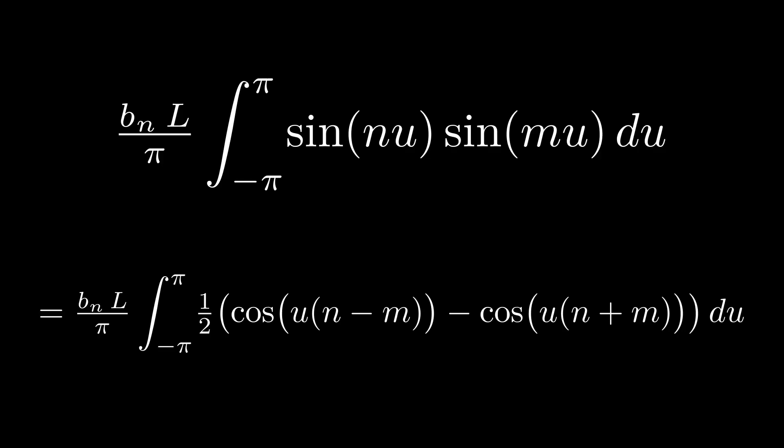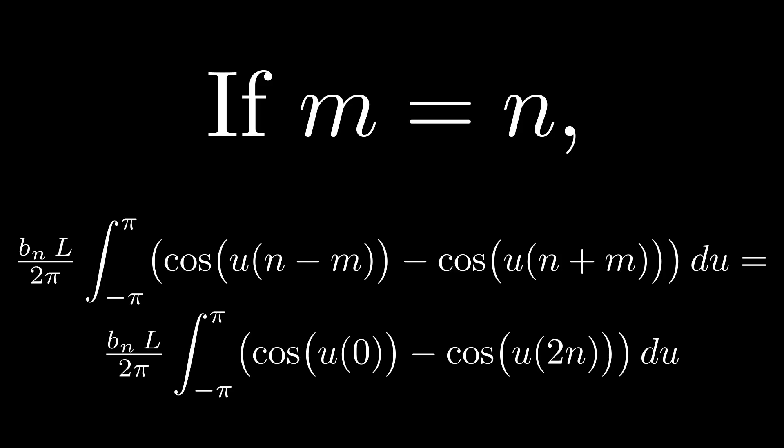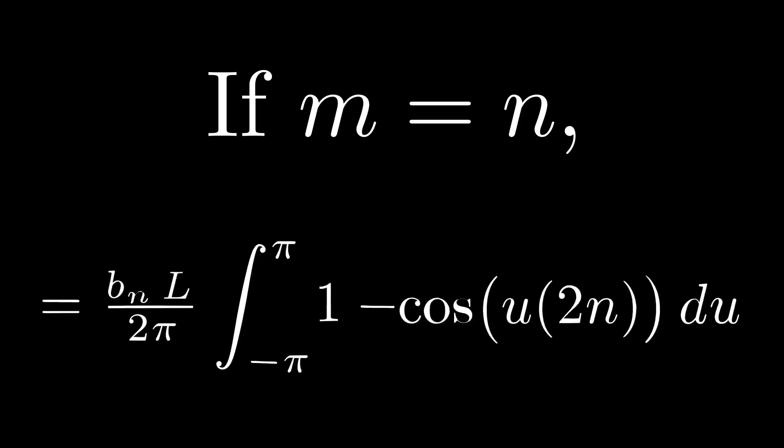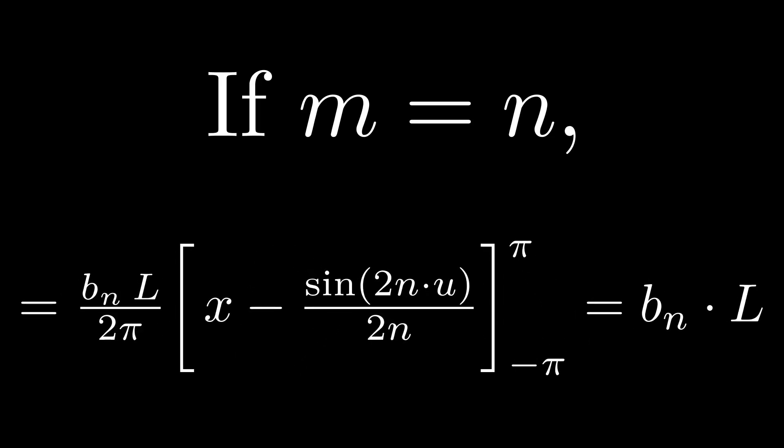Remember that we're working under the idea that m is a positive integer. n is obviously a positive integer as well. Therefore, the sum and difference of n and m must also be integers. So now this means there are two cases to consider. We have to consider when m and n are equal, and when they are not. Remember that all of this integration is happening within an infinite sum. Let's assume that m equals n. In that case, our integrand reduces to this. 1 minus cosine of 2n times u. If we evaluate this integral, we find that it's equal to b sub n times half the period of our function, which is just l.